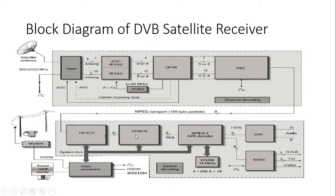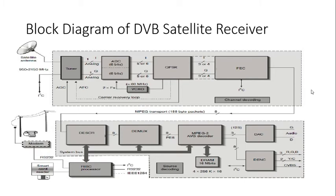The descrambler receives 188-byte transport packets and communicates with the main processor via a parallel bus to descramble them. Demultiplexing is then performed using programmable filters. The MPEG-2 decoder receives the packetized elementary stream from the demultiplexer and outputs audio and video signals. A DENC (digital video encoder) converts these into analog RGB signals for display quality. Decompressed digital audio signals are passed through a DAC to produce analog audio output.